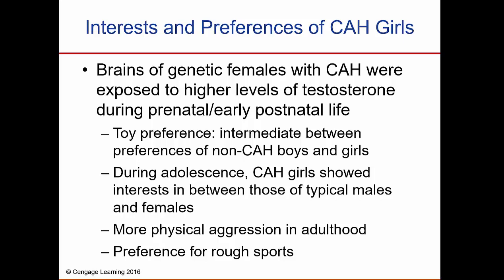We're talking about how in the first trimester hormones organize the genitals, but next we're going to the hypothalamus — which is probably the second trimester — and then the cortex, which is the third trimester. Brains of genetic females with CAH were exposed to higher levels of testosterone during prenatal and early postnatal life. Their toy preferences were intermediate between those of non-CAH boys and girls, and during adolescence CAH girls showed interests in between those of typical males and females.